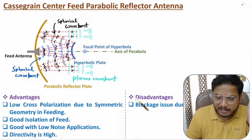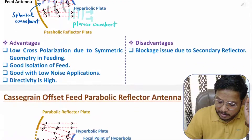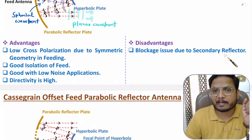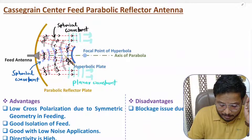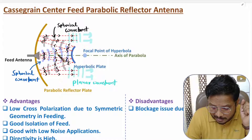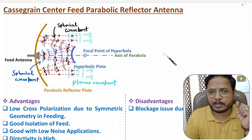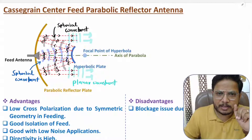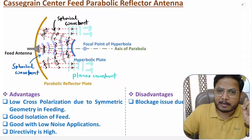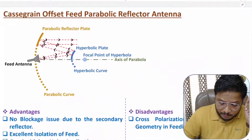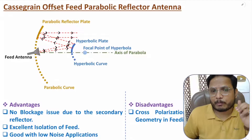One disadvantage of the Cassegrain center feed design is blockage due to the secondary reflector. The secondary hyperbolic reflector plate comes in between the path of travel of the EM waves in the forward direction, causing a blockage issue. To avoid this blockage issue in the Cassegrain category, we use the Cassegrain offset feed parabolic reflector.